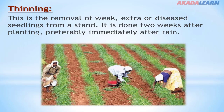Depending on the crop cultivated, there is a specific number of seedlings that are expected to be on a stand. For example, for corn, 2 seedlings or 2 plants are expected to be on one stand. At the beginning of planting or sowing, it is expected that the farmer should sow more than two in case of failure of one or two, so at least there will be a crop on the stand. If all the planted or sowed seeds germinate, there is a need to reduce the number of seedlings in a stand to prevent unnecessary competition of soil nutrients by the plants.